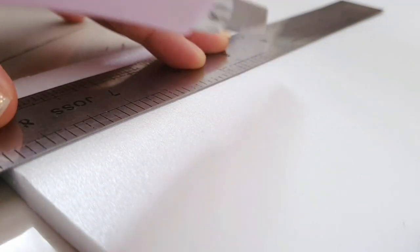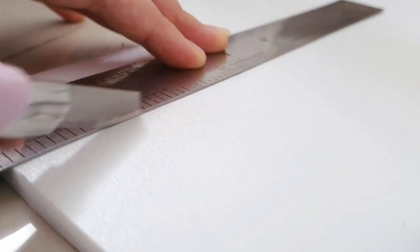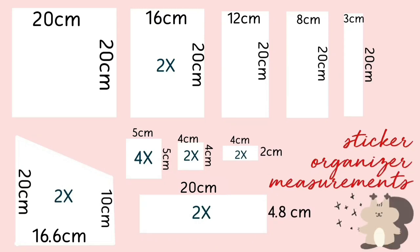The first thing you want to do is measure and cut out your foam board pieces, and here's the measurement that I use.